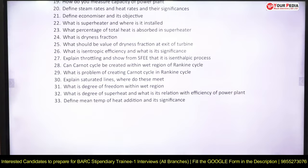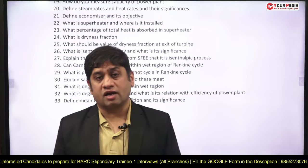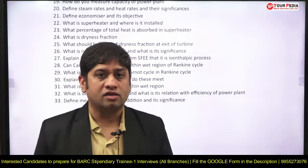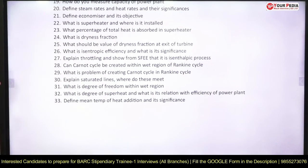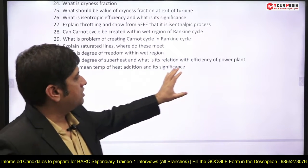Can a Carnot cycle be created within the wet region of the Rankine cycle? The Carnot cycle has two isothermal and two isentropic processes — can it be created within the wet dome of the Rankine cycle, and what is the problem with doing so? Explain the dry saturated line and wet saturated line — where is dryness fraction zero and where is it one, and where do they meet?